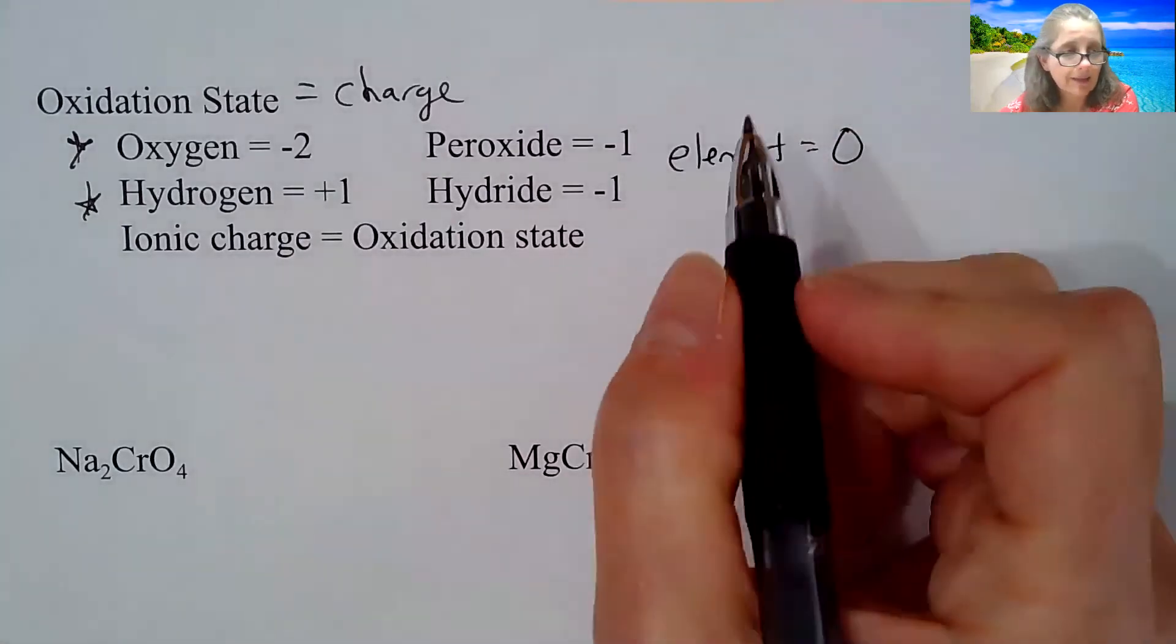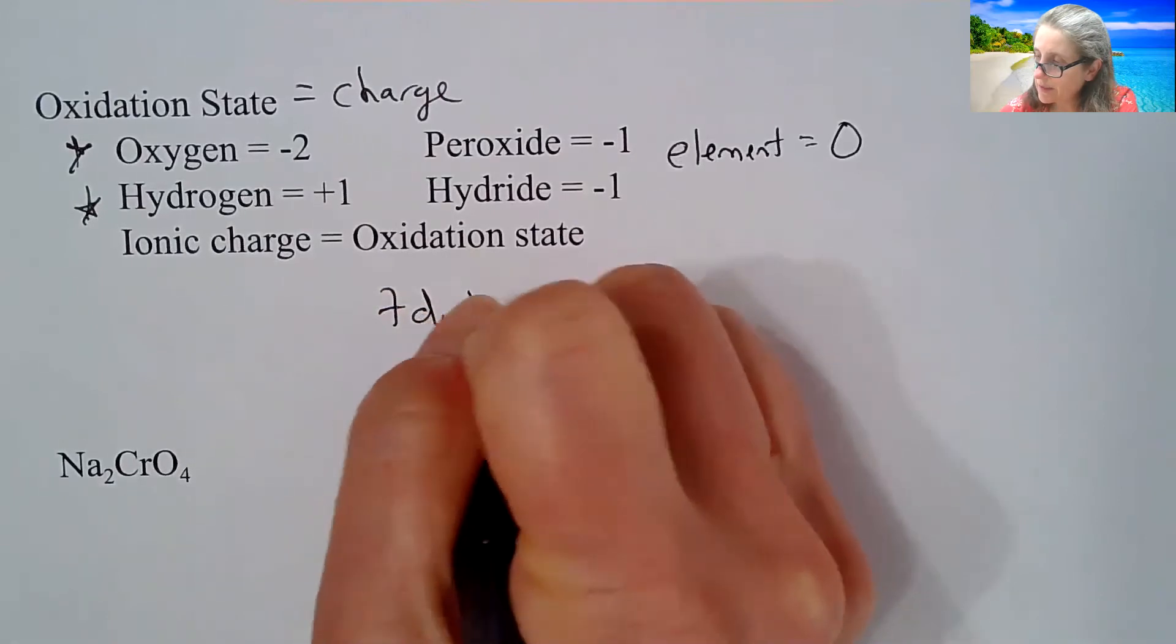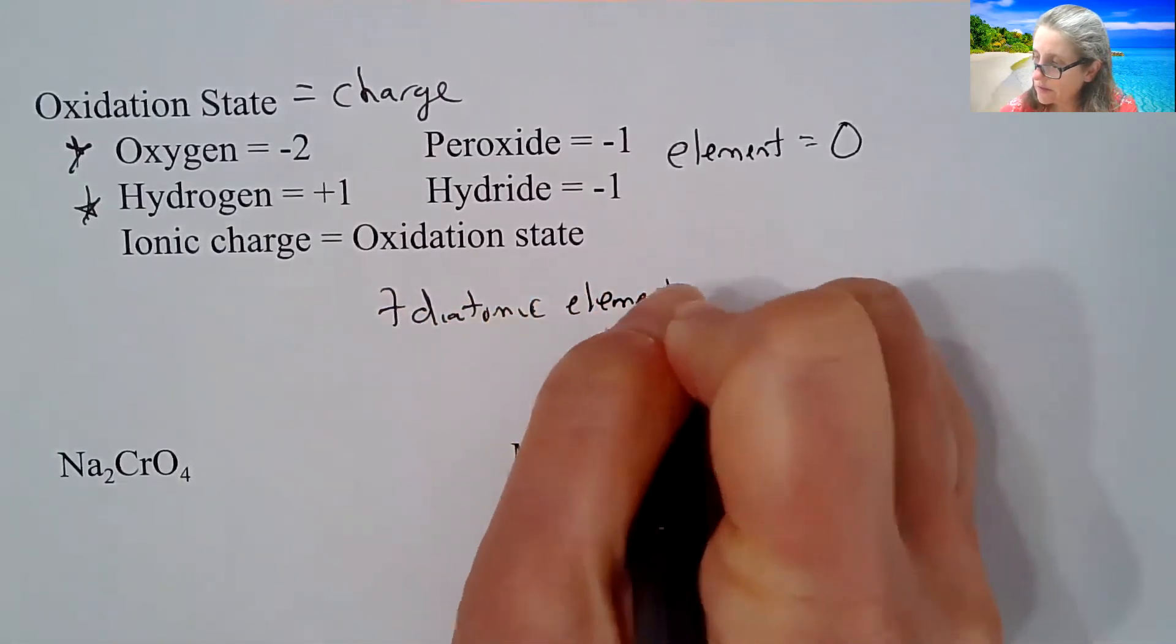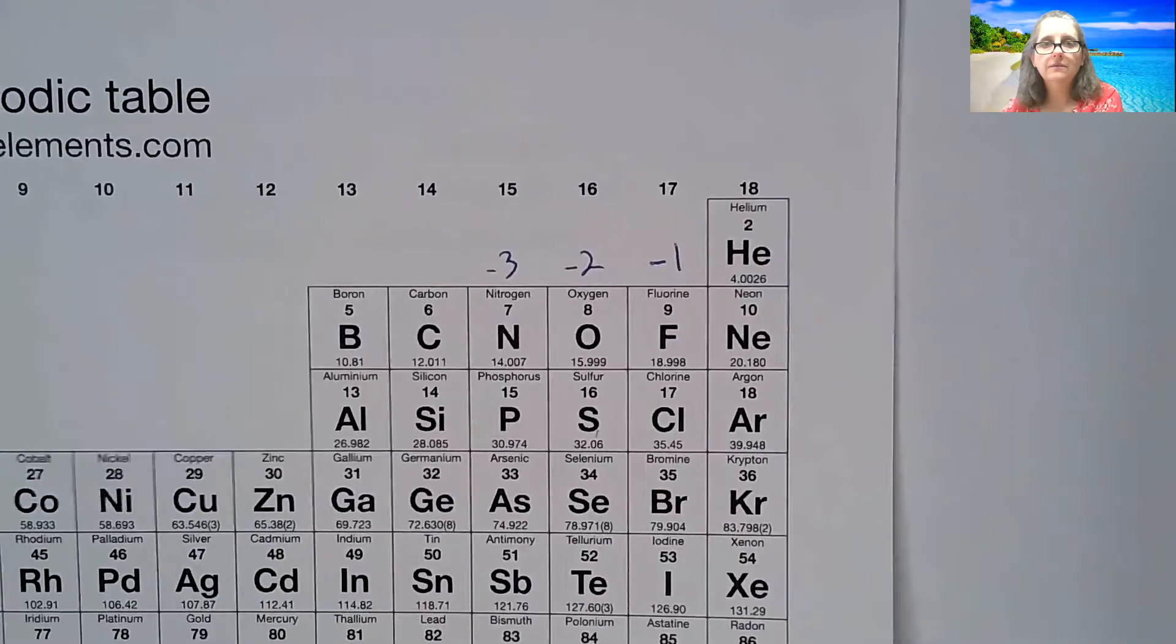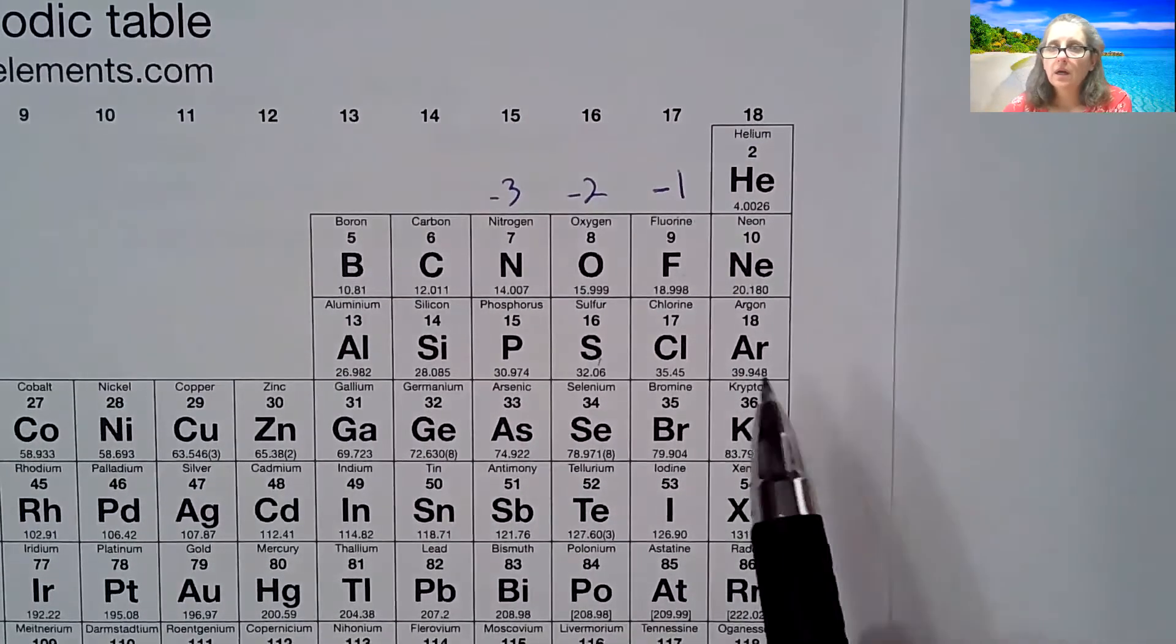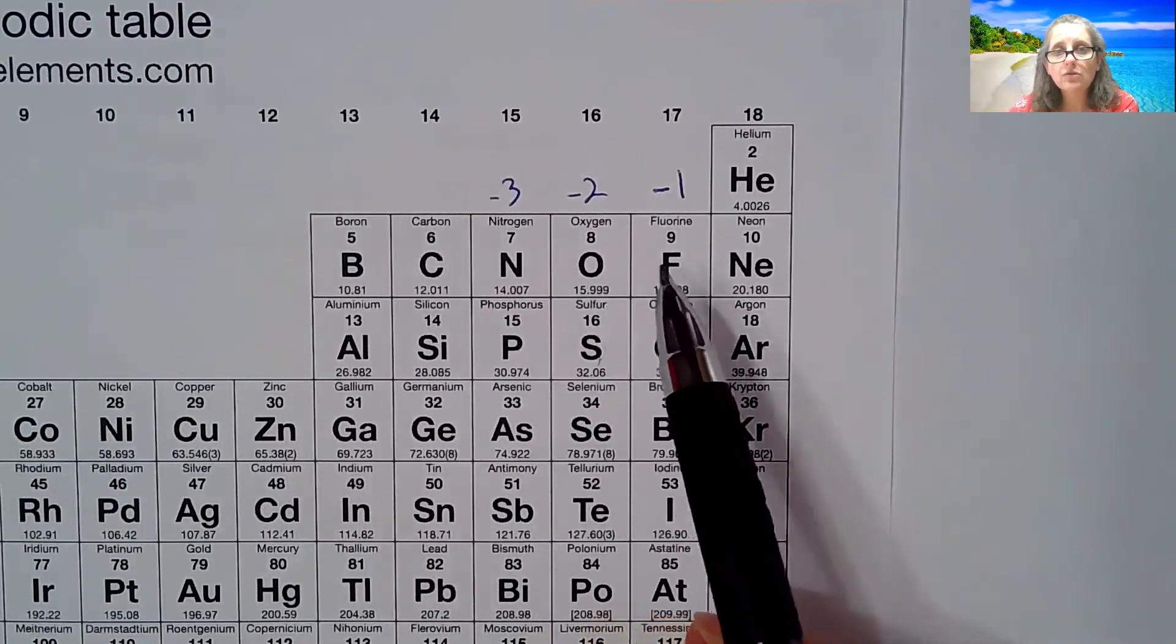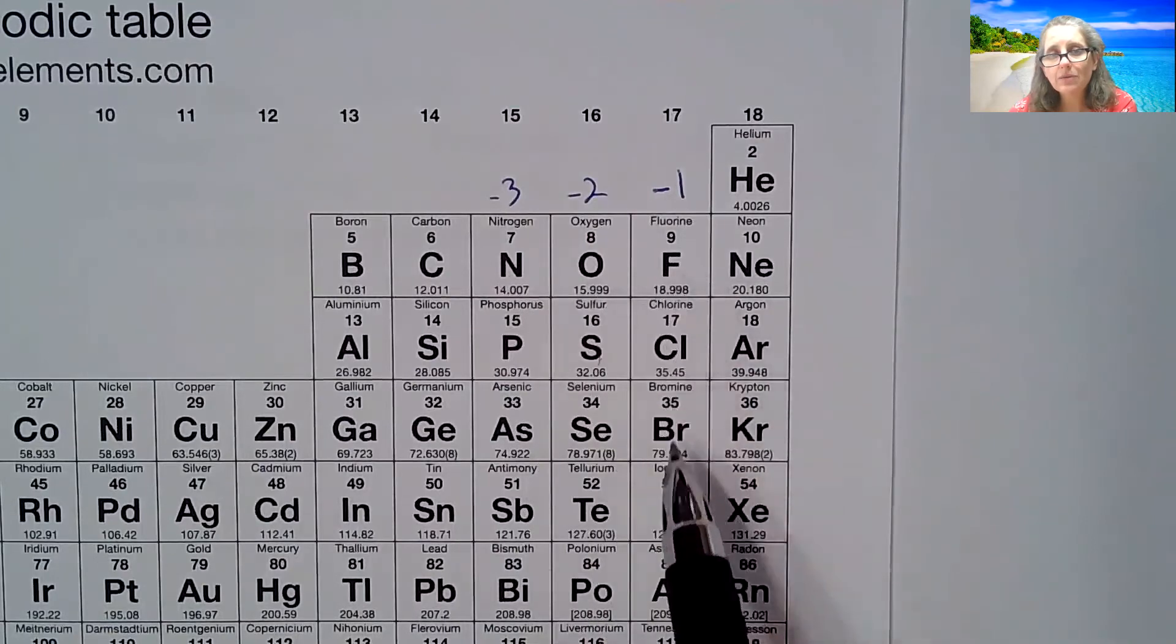So do understand that any element is going to have an oxidation state of zero. So please write that in. And then also, I want to mention the seven diatomic elements. Those are still considered elements; they are going to have an oxidation state of zero. So how do you remember the seven diatomics? Start with the number seven. That's nitrogen, oxygen, fluorine, chlorine, bromine, iodine. So it looks like the number seven.